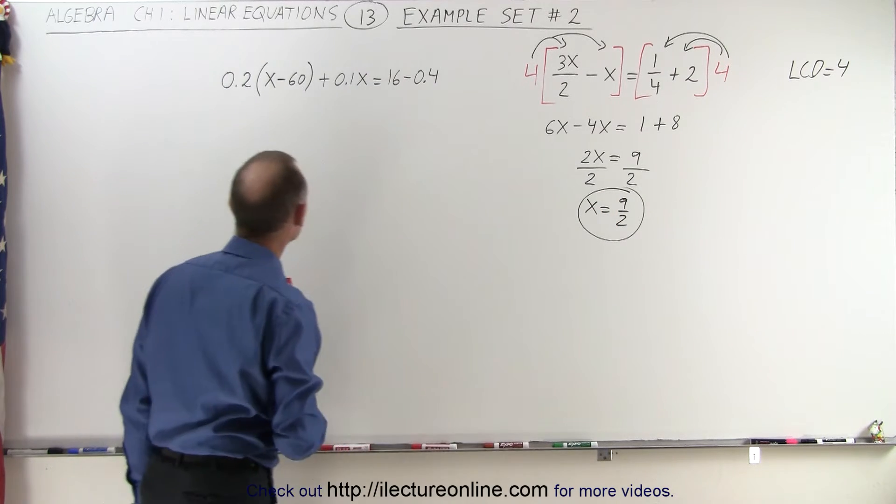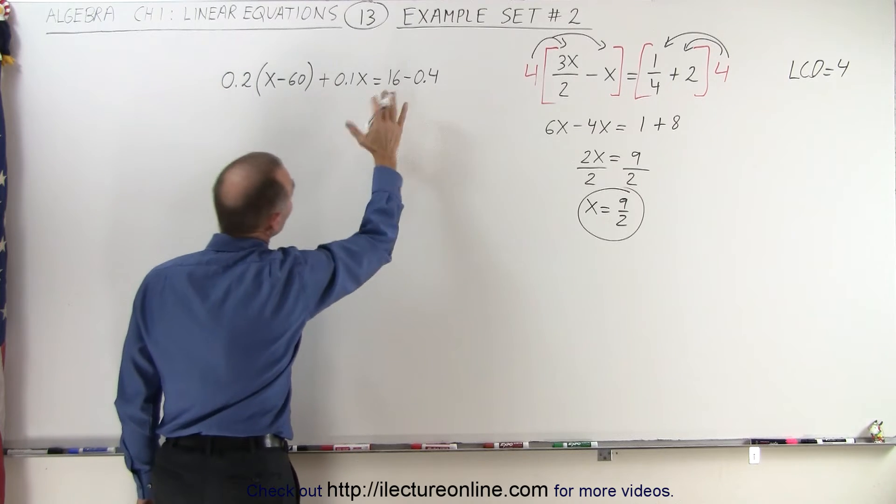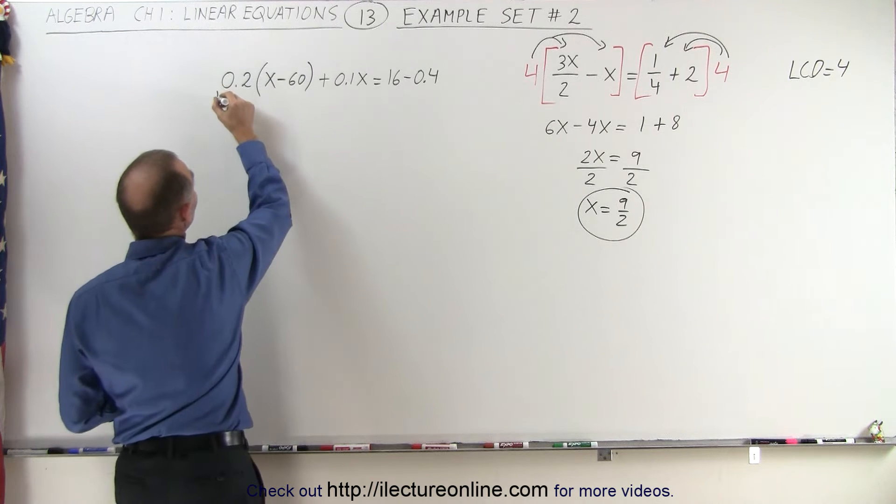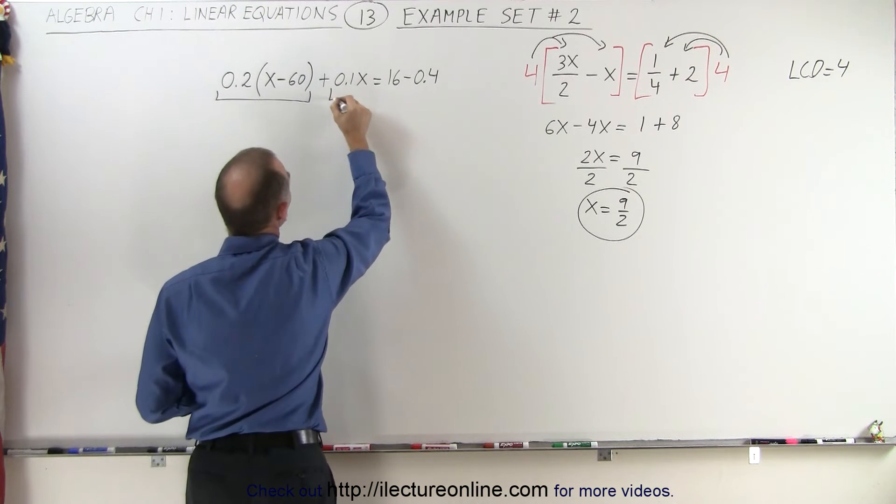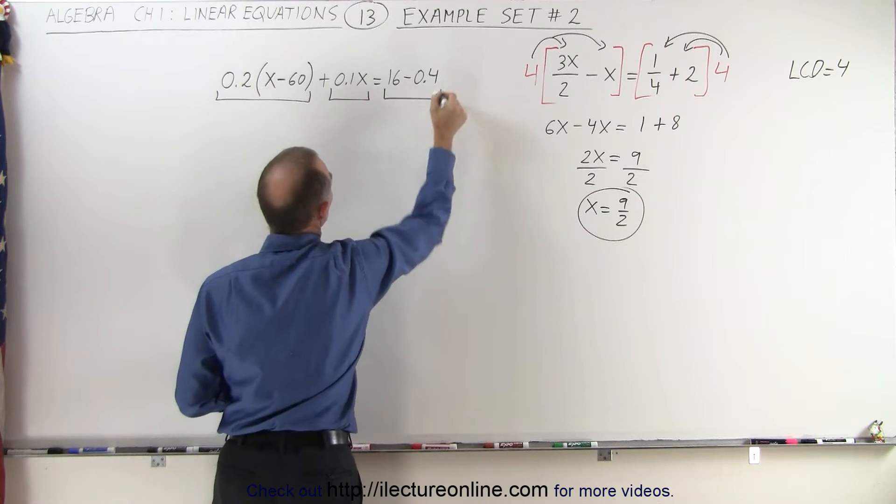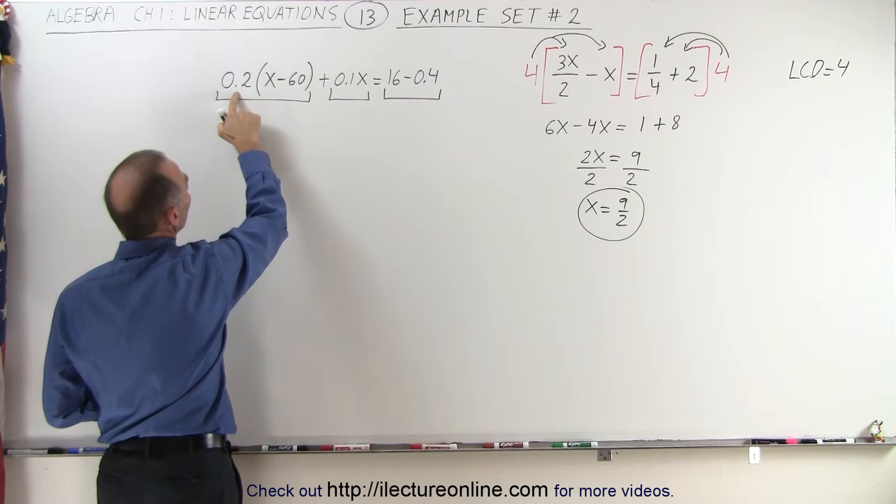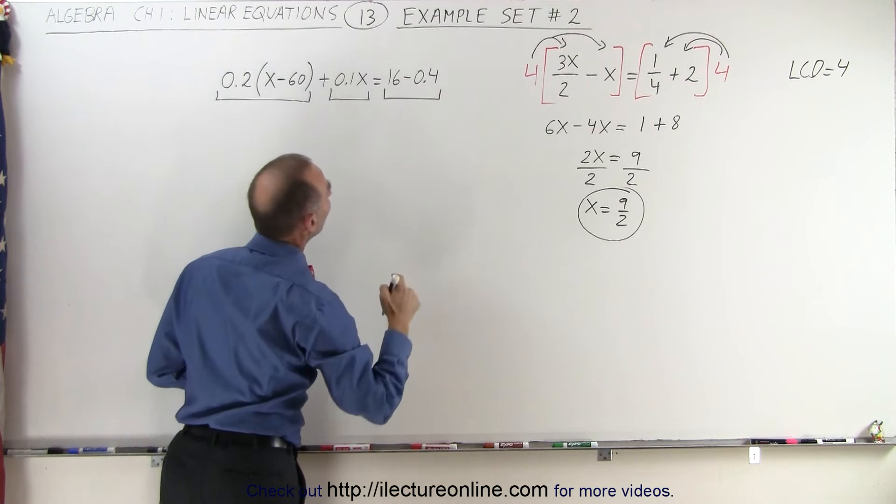On the left side we have parentheses, we have decimals, we don't have fractions. We just have decimals and parentheses. Now notice that this is a single term because these are multiplied together, this is a single term, and this is a single term. We can look at those three terms and each of them has a decimal with one decimal place.